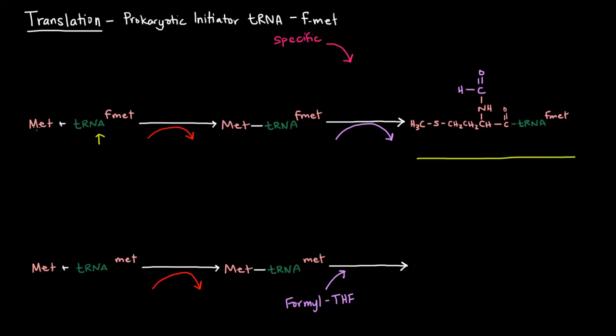Methionine is the amino acid coded for by the start codon. So in prokaryotes, their initiator tRNA is a little bit specific.